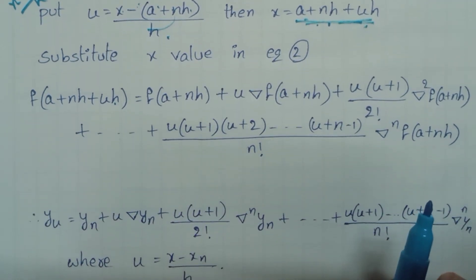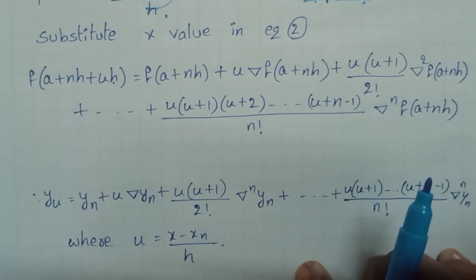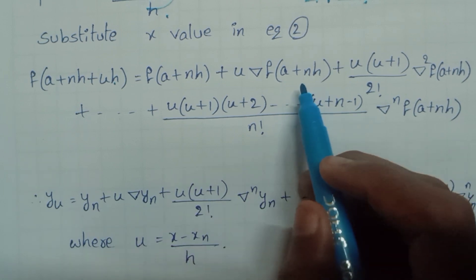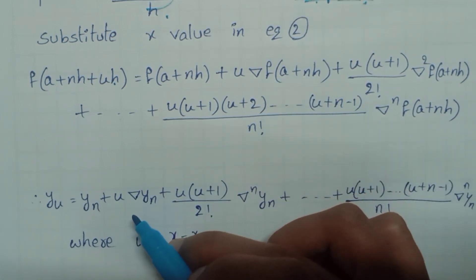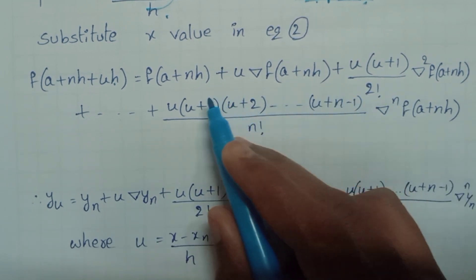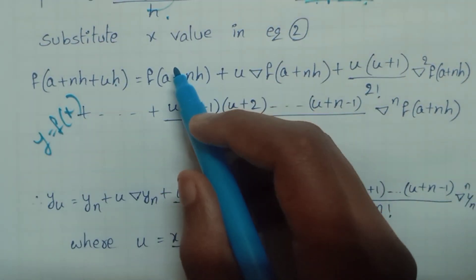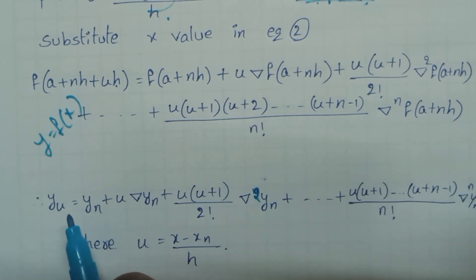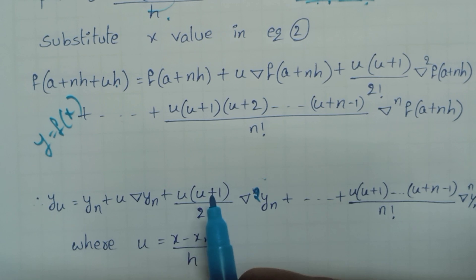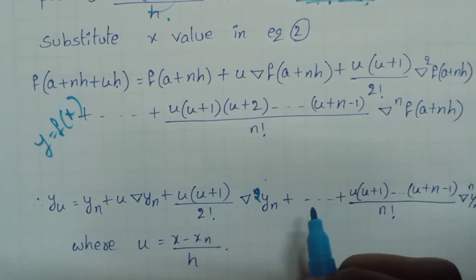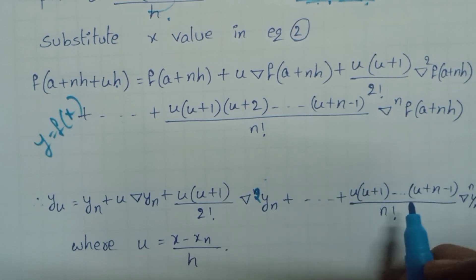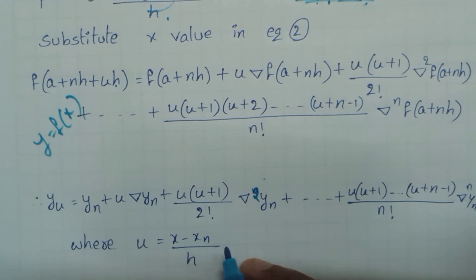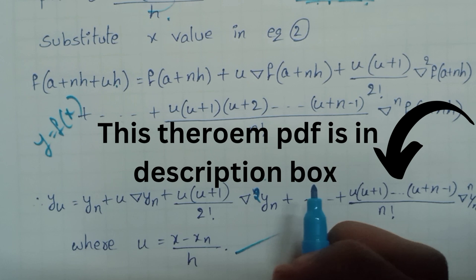Final step: writing f(a+nh+uh) as Yu, and replacing f(a+nh) with Yn, nabla f(a+nh) with nabla Yn, nabla² f(a+nh) with nabla² Yn, the required backward difference formula is: Yu = Yn + u·nabla Yn + u(u+1)/(2!)·nabla² Yn + ... + u(u+1)...(u+n−1)/(n!)·nabla^n Yn, where u = (x − Xn)/h. This is Newton's Backward Interpolation Formula derivation.